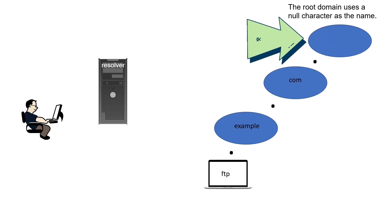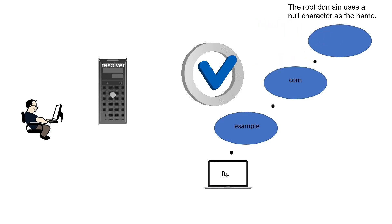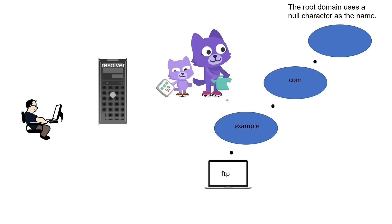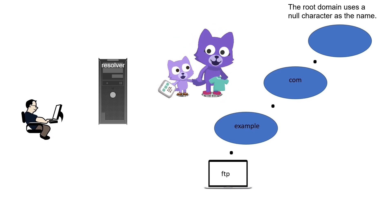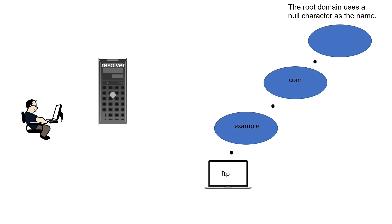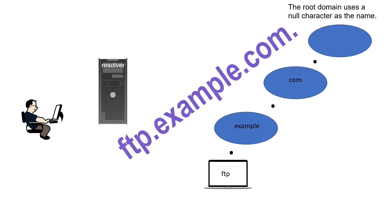In this hierarchy, the root domain stands at the top. It uses a null character as the label. You can write a resource name with or without its parent's domain name. If you write its name with parent domain names, it is called a fully qualified domain name. A fully qualified domain name uses dots to separate domain names. It starts with the resource's name and ends with the root domain's name. Since the root domain uses a null character as the name, it always ends with a dot.